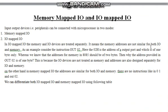In I/O mapped I/O, the memory and I/O devices are treated separately. It means the memory addresses are not similar for both I/O and memory. As an example, consider the instruction OUT 02. Here the 02 is the address of an output port.